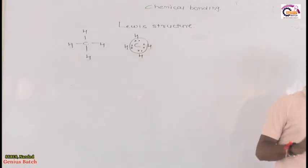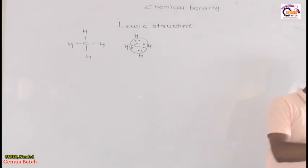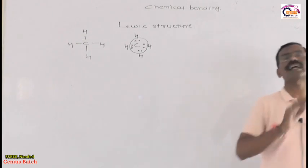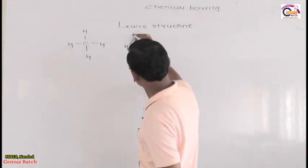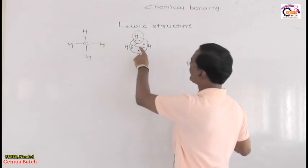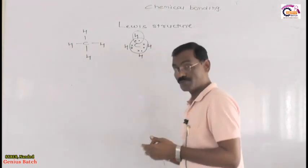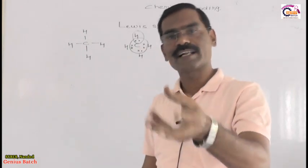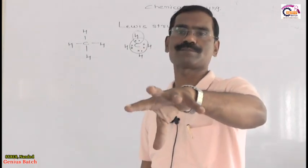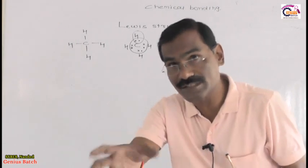Second point of Lewis structure: all atoms in a formula will have a total of 8 electrons by sharing in the valence shell, except the hydrogen atom. Hydrogen has only 2 electrons. While representing Lewis structure, except hydrogen, each and every atom must have 8 electrons around it.